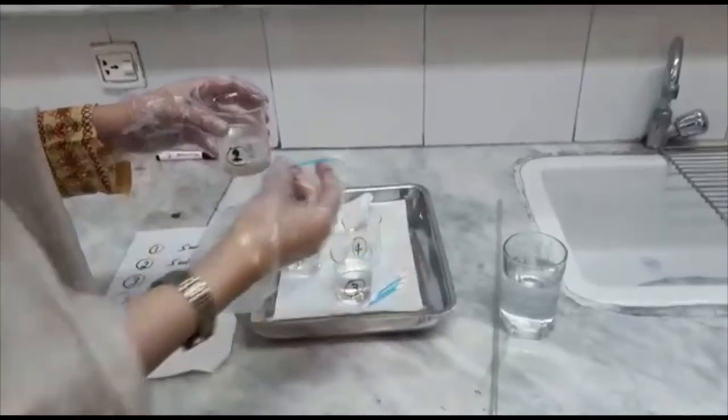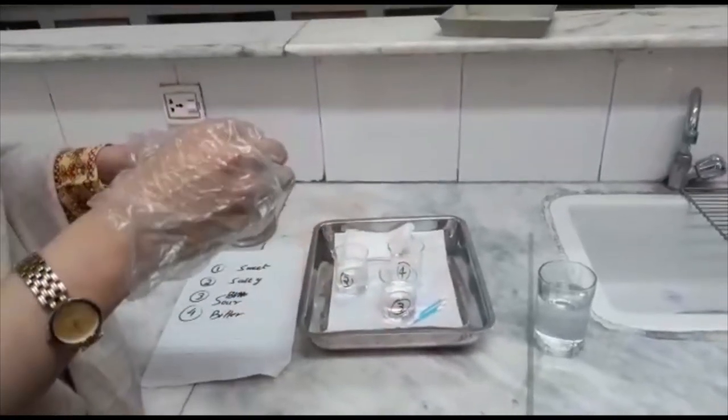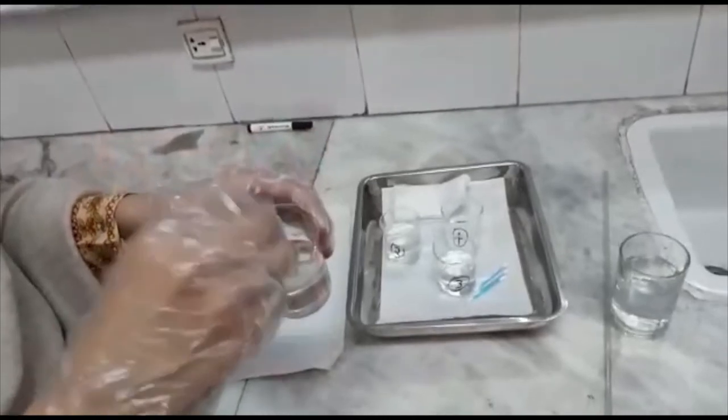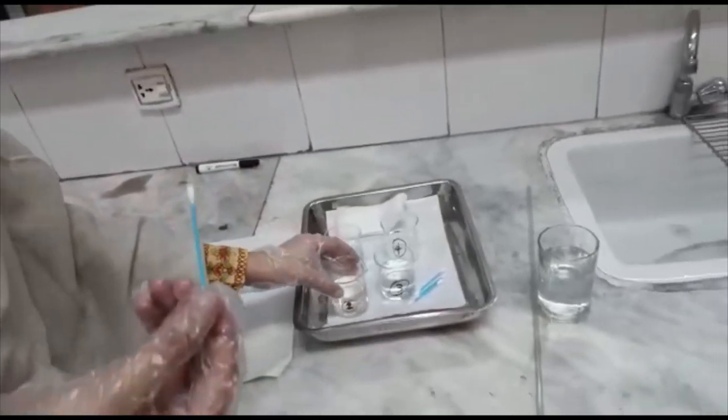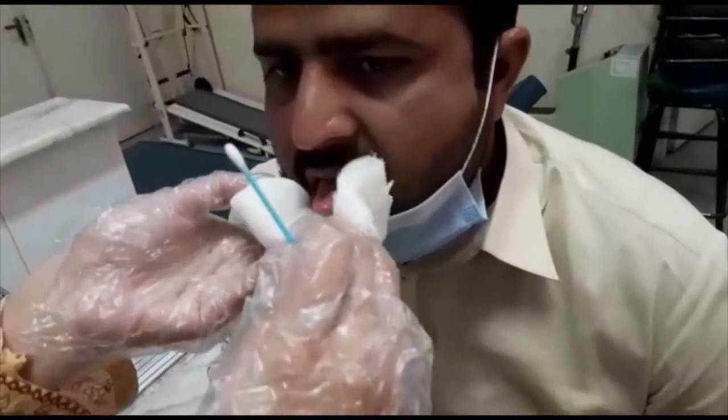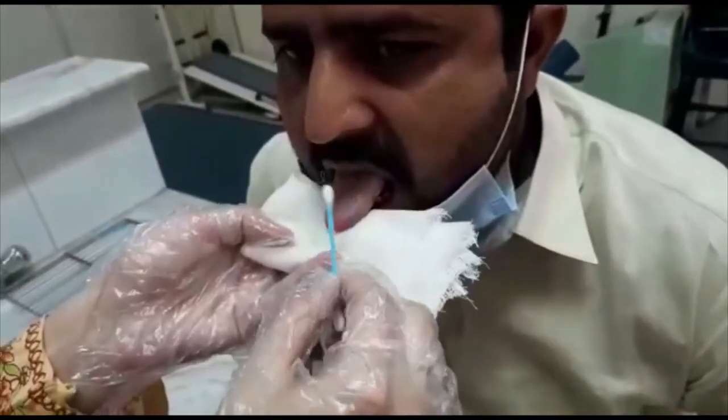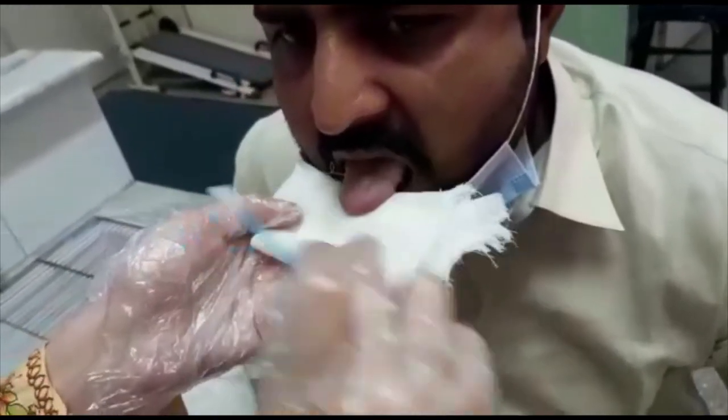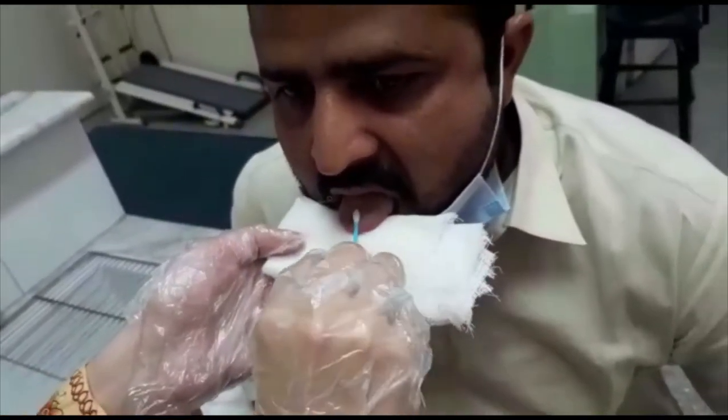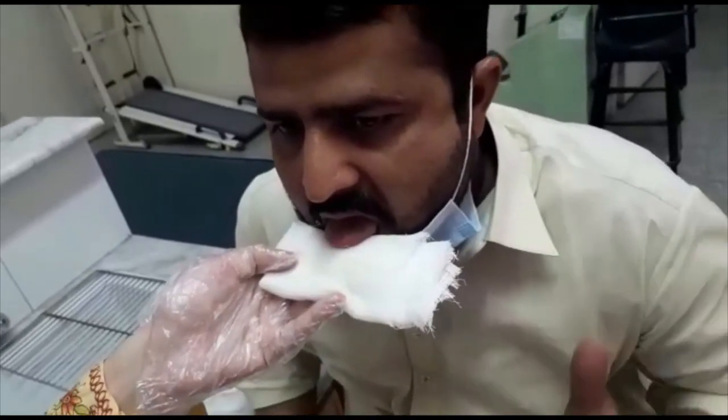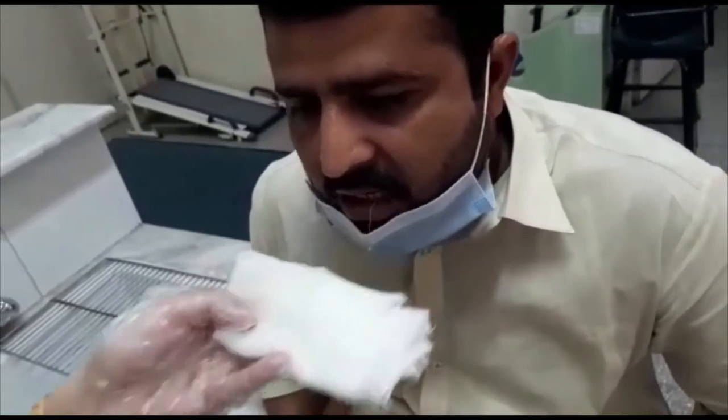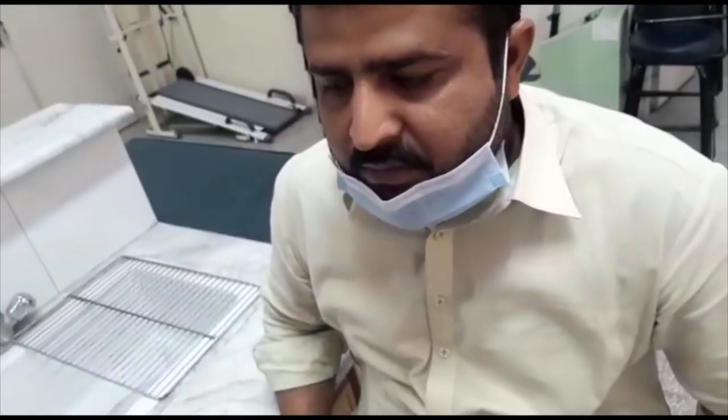First of all, we will take a cotton bud and dip it deeply into the solution. Take it out. Hold the tongue with gauze piece. Dry its part and apply the solution. So he has felt sweet taste.